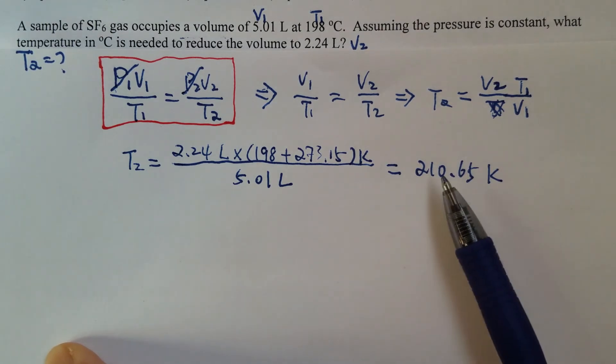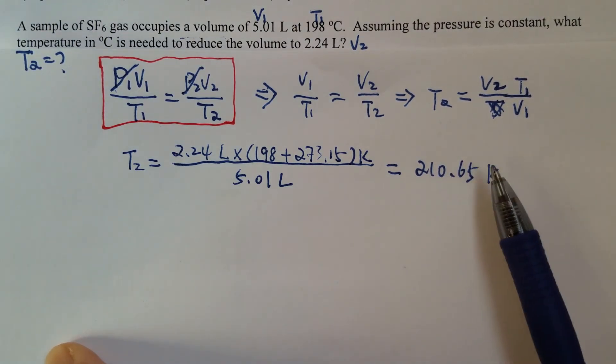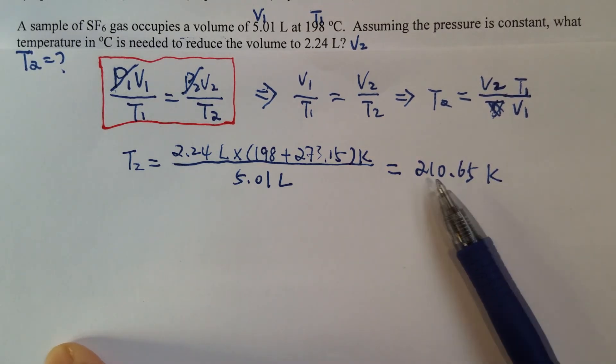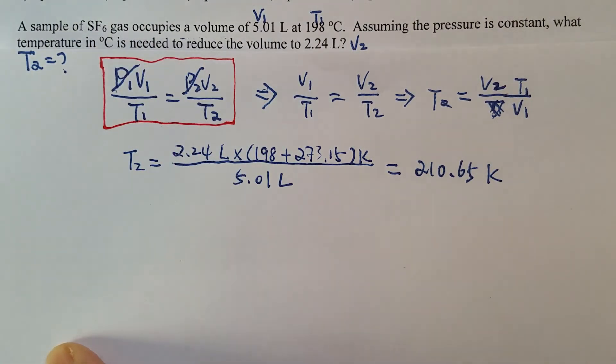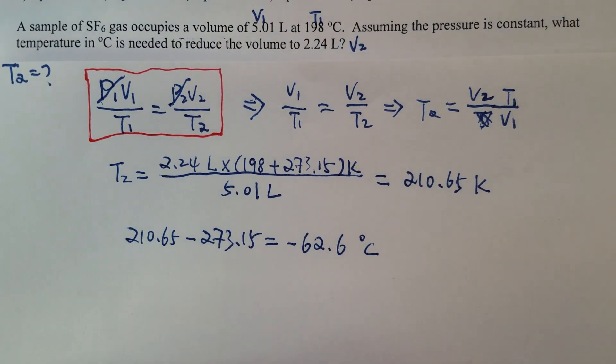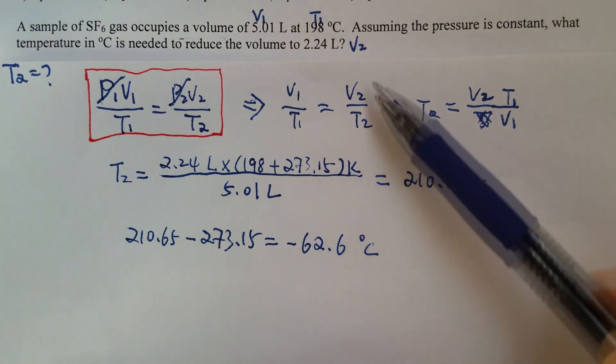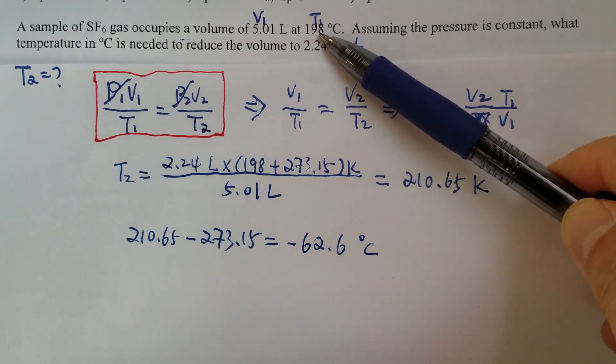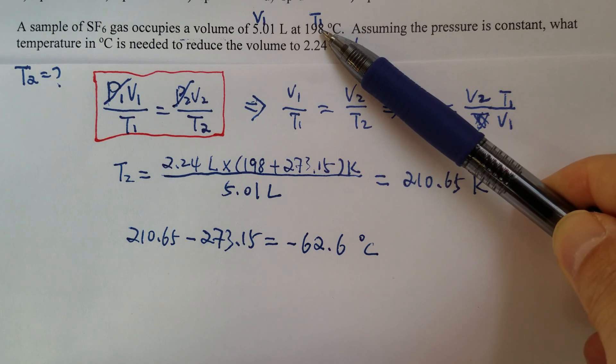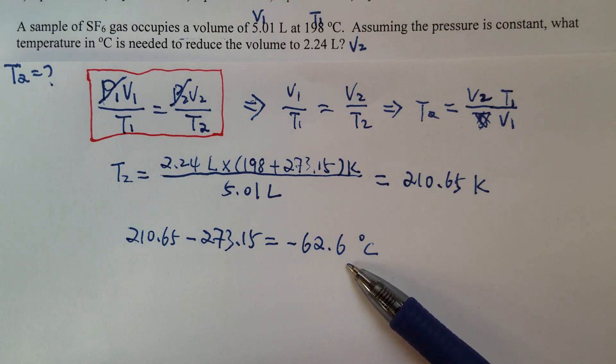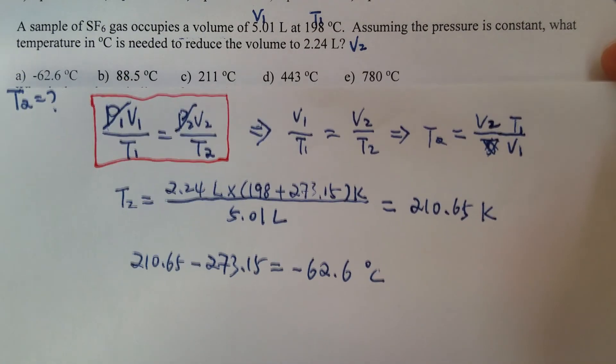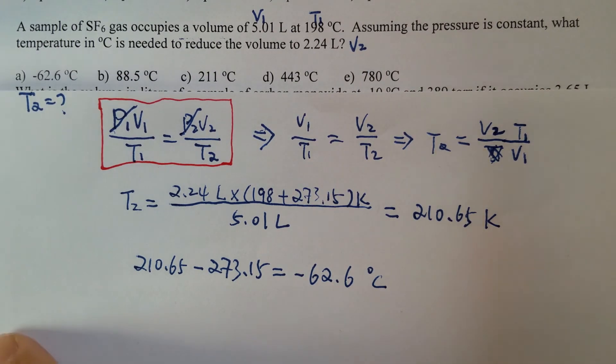So the answer here is 210.65 Kelvin. And we have to convert that to Celsius, because what I ask here is the temperature in Celsius. Converting the Kelvin degree to Celsius, so this is what we have. I keep three sig figs because in the question, you see the temperature here, that's three significant figures. So that's why I keep three sig figs here. Obviously, let's look at the choices. Yeah, it should be the correct answer.